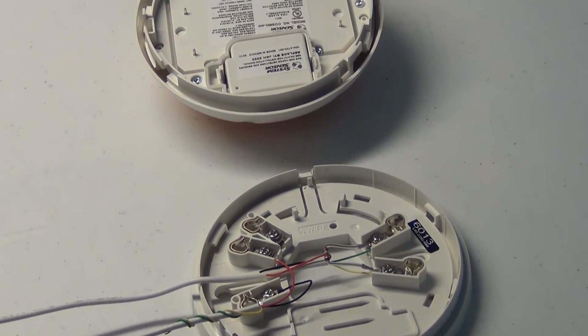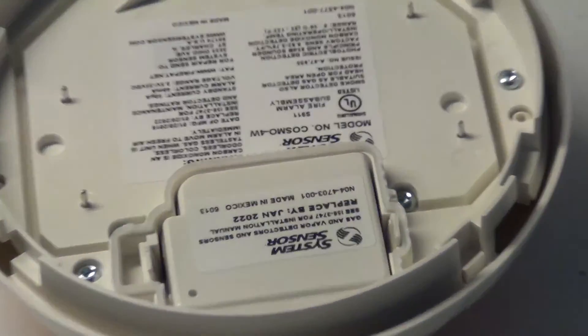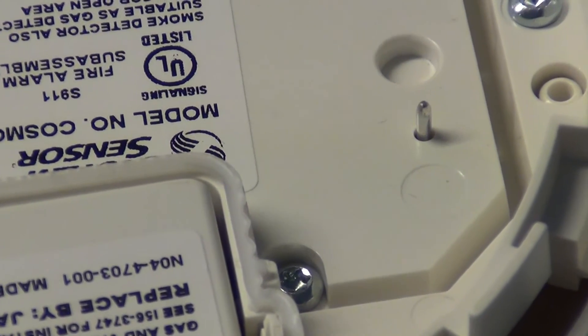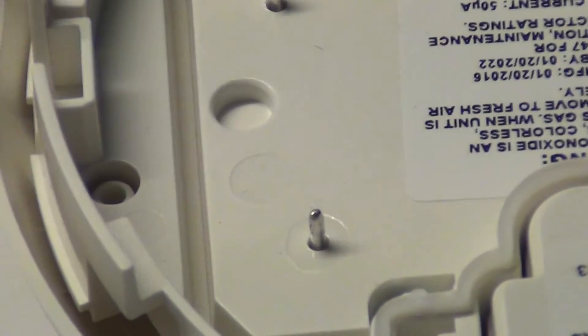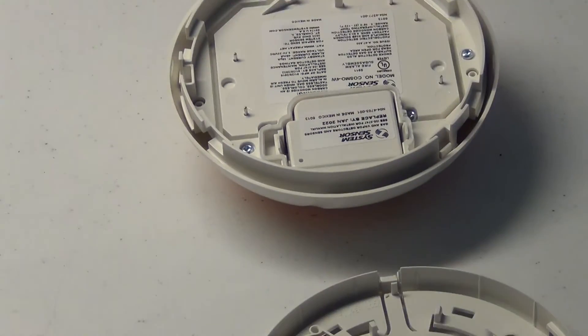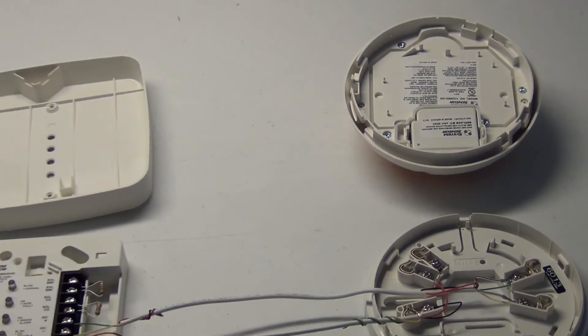And then after you get done with that you take your smoke CO heads and they will connect to the little metal loops you saw via these metal pins. So that's where you're going to get your contact for operation. These are really nice units.